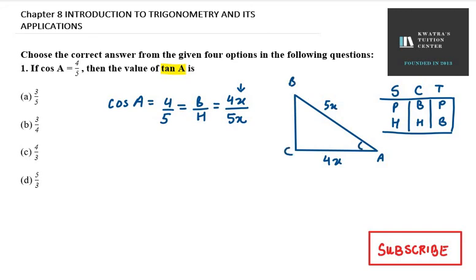Cos A is given as 4x over 5x. First of all, we have to find the perpendicular. Now, how do we find perpendicular? As you can see this is a right-angled triangle, so let's apply Pythagoras theorem here.